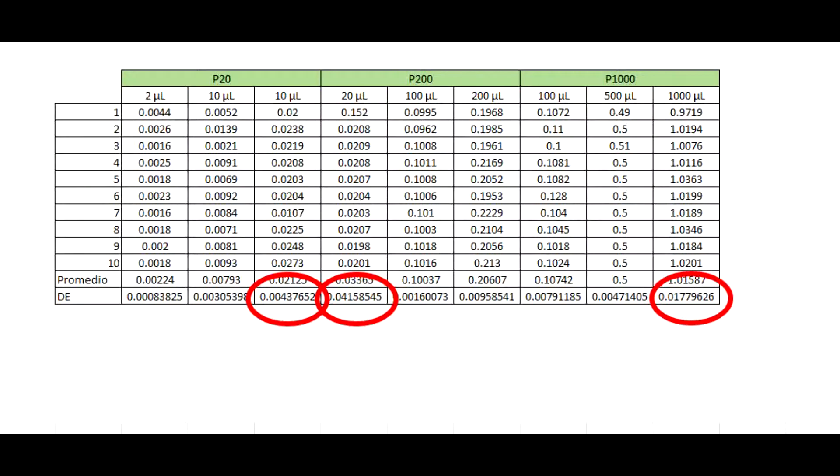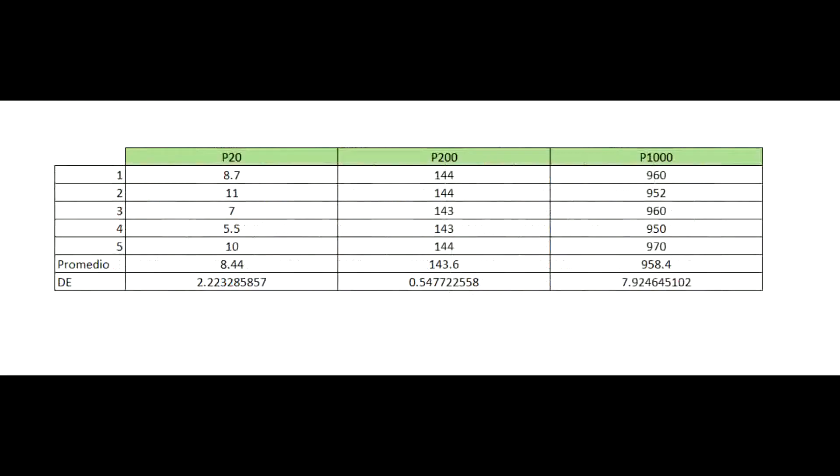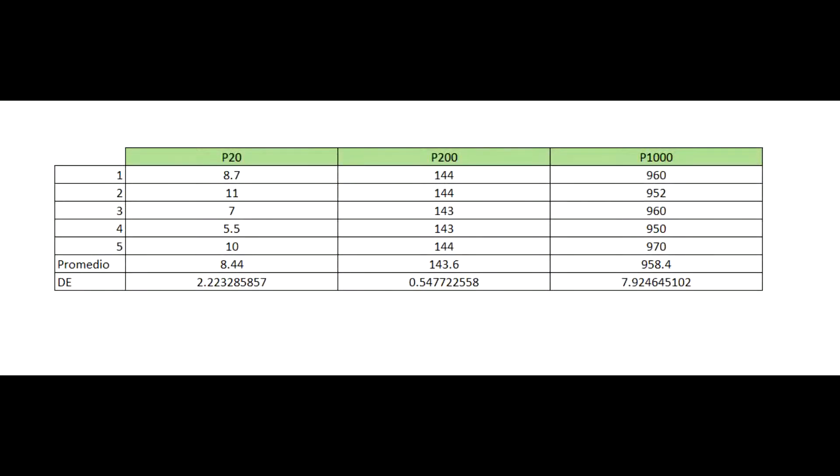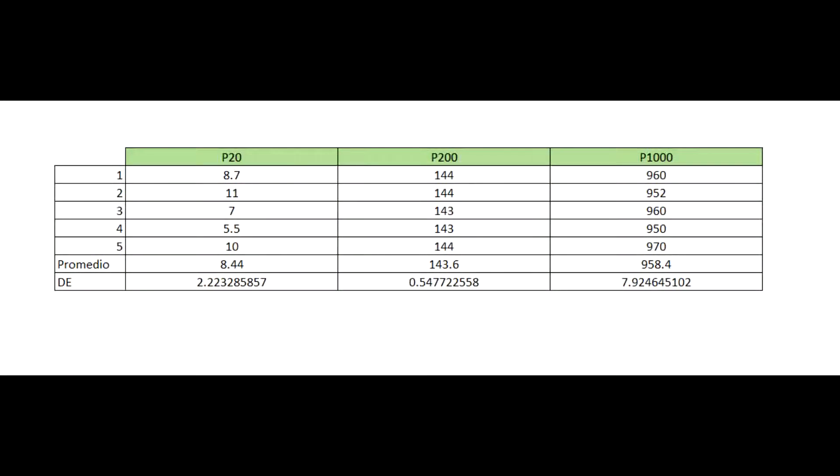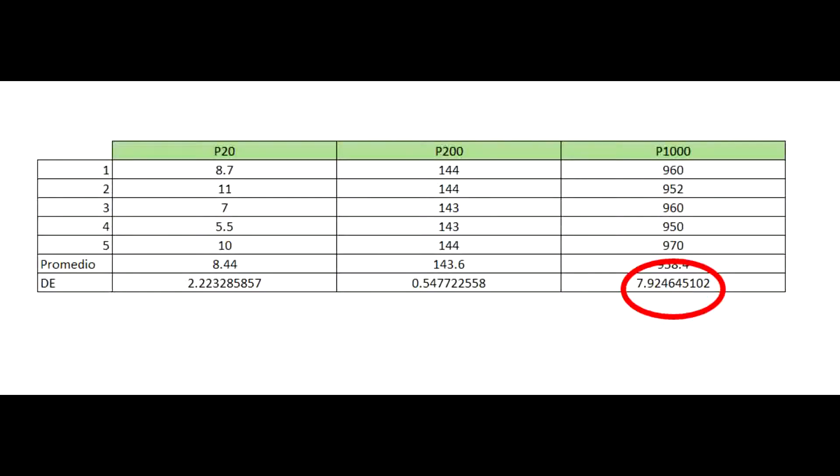In this case, we can see that the largest standard deviation value of each micropipet is located in the limits of each kind of micropipet. In the second experiment, the standard deviation values are different, but we can see that the largest value of standard deviation is from the micropipet of 1000 microliters.